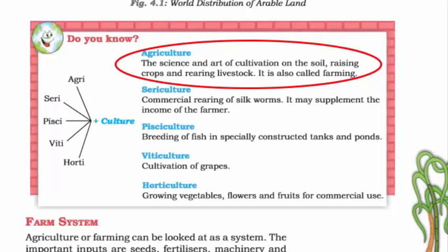The classic definition of agriculture says: the science and art of cultivation on the soil, raising crops and rearing livestock. It is also called farming. The reason it says science and art is because knowing about the soil, the climatic conditions, the crop patterns, and the fertilizer — all of this is science. And art refers to the way of growing crops, the right type of machinery that needs to be used, and allocating a specific number of people for agricultural work.